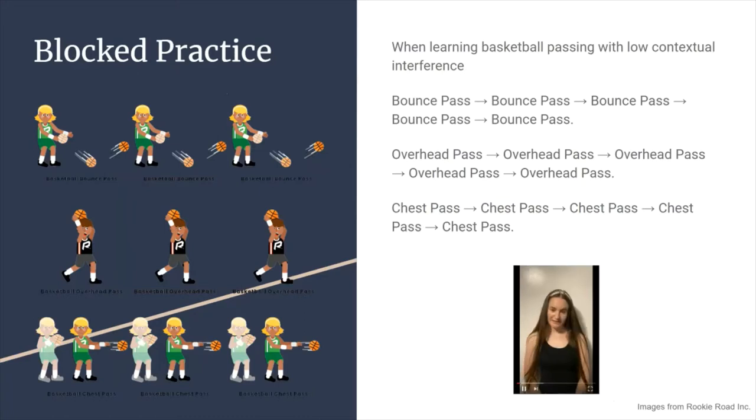A way of practicing with contextual interference is blocking the trials, which results in very little contextual interference. An example of this block practice is learning how to play basketball with the person practicing all the bounce pass trials first, then moving on to the overhead pass trials, then moving on to the chest pass trials. This practice is blocked as the person does not move on to another skill until the trial for one skill is completed.